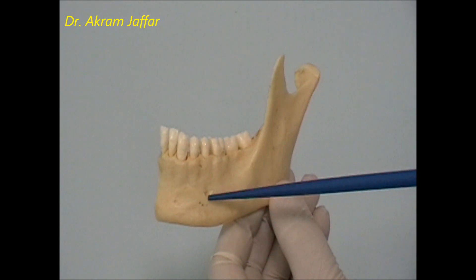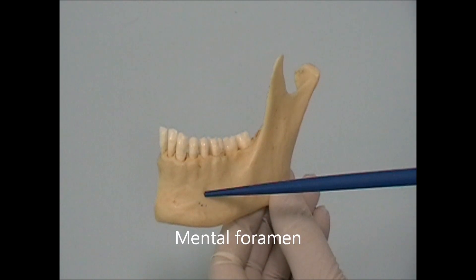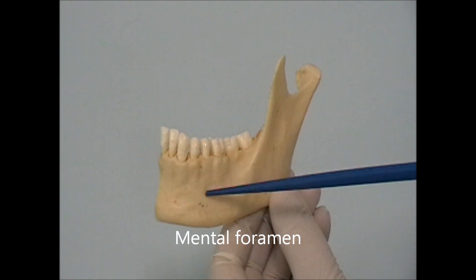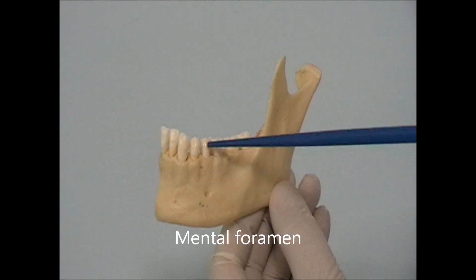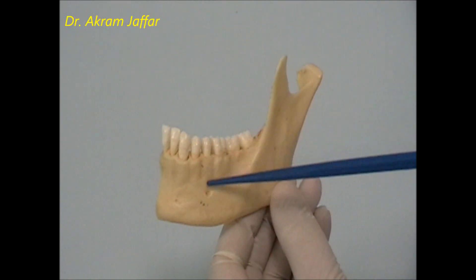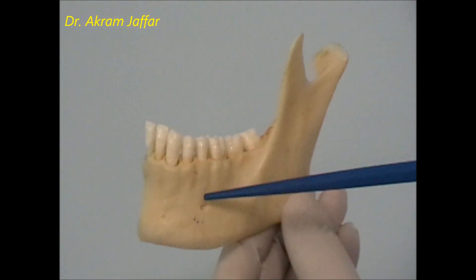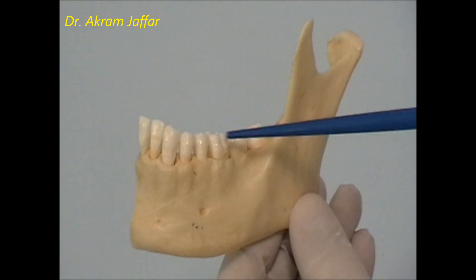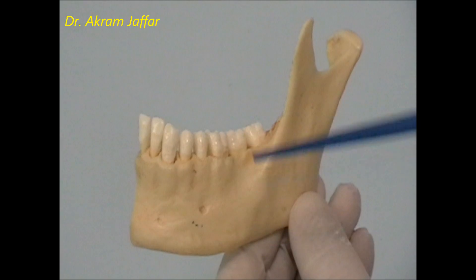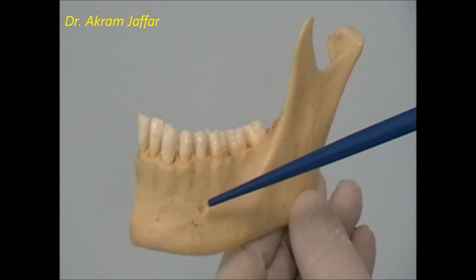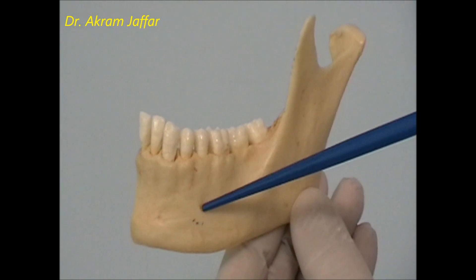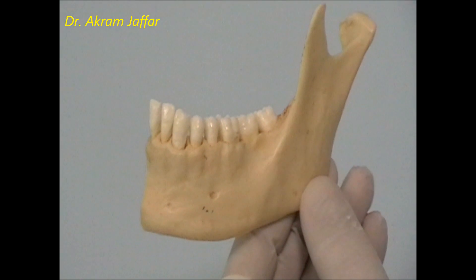Here is the mental foramen, which transmits the mental nerve and vessels. The mental foramen is usually level with the second premolar tooth. These are the molar teeth. You can see the direction of the mental foramen — it is directed upwards and laterally.